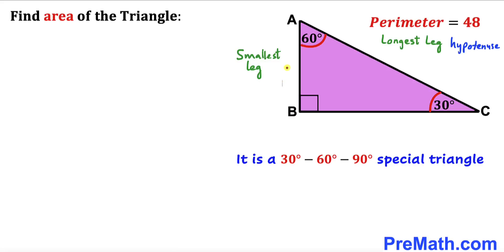In other words, if the smallest leg is one unit, then the longest leg is going to be twice that — it becomes two. And the third leg is going to be square root of three. So in general, if our smallest leg is x units, then our longest leg is 2x, and our third leg is x times square root of three.